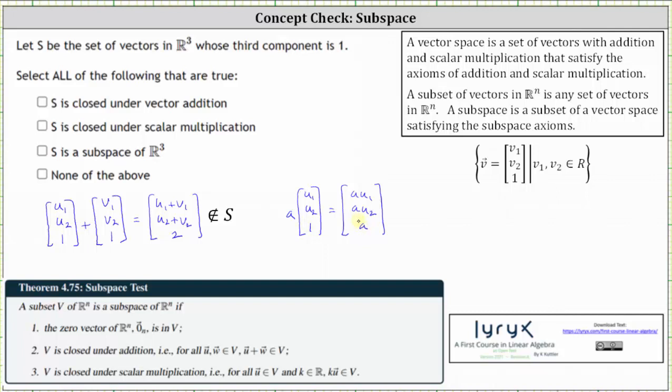Notice the result here is only going to be in the subset S when A equals one, but A can be any real number, and therefore the subset S is not closed under scalar multiplication. So in this case, we select none of the above.